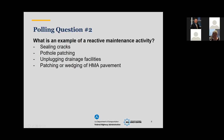We have another polling question: what is an example of a reactive maintenance activity? Options include sealing cracks, pothole patching, unplugging drainage facilities, and patching or widening of an HMA pavement. This goes back to looking at the definition of preservation and the types of maintenance activities that agencies deal with.